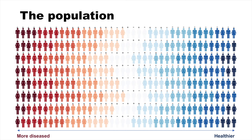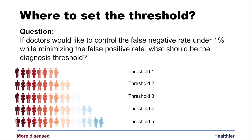In such applications, false negative rate is a significant concern, because mispredicting a cancer patient as healthy will delay treatment and may cause loss of life. Suppose that doctors would like to control the false negative rate under 1% while minimizing the false positive rate. What should be the diagnosis threshold?